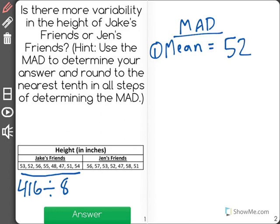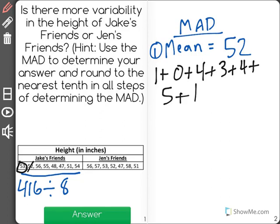Now, to find the mean absolute deviation, I'm going to see how much each number in that data set varies from 52. So, the first number is 53. That's 1 away from 52. 52 is 0 away, and so on and so forth. 56 will be 4, 55 is 3, 48 is 4, 47 is 5, 51 is 1, and 54 is 2.